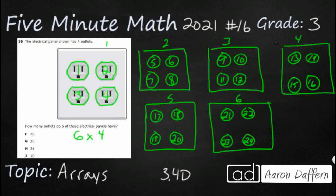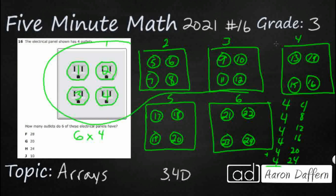Some of you might have just done repeated addition, which would have worked as well, because multiplication can be thought of as repeated addition. You might have just said 4 plus 4 plus 4 plus 4 plus 4 plus 4, or maybe skip counting: 4, 8, 12, 16, 20, 24. Another option: once you got halfway through — three panels in — you realized you had 12 electrical outlets. You could say this is halfway, I'll just double it. Since the first half is 12 and the second half is 12, doubling gives you 24. All of those get you to the correct answer.